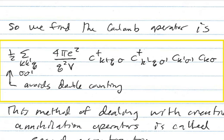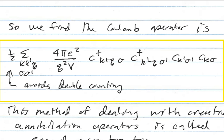Plugging the matrix element into the definition of the Coulomb operator in second quantized form, we get a factor of one-half — which comes from avoiding double counting since the electrons are indistinguishable. The final result is one-half times the sum over k, k', q and spins sigma, sigma' of [4πe²/(q²V)] times c†_{k+q,sigma} c†_{k'−q,sigma'} c_{k',sigma'} c_{k,sigma}. This is set up so that momentum is conserved in the interaction.